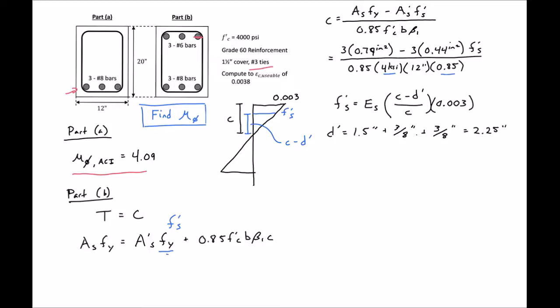If we plug our D prime into this expression, and then this expression in for our Fs, we can solve for our C. C will be our only unknown, and we'll find that C equals 3.15 inches. You can use any kind of solver. We can then plug in our C to check our assumption that F prime S doesn't yield, and we'll find F prime S to be 24.9 KSI.